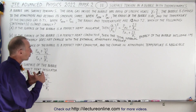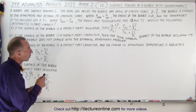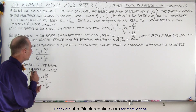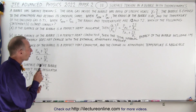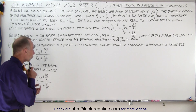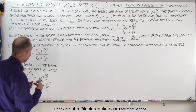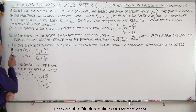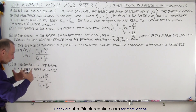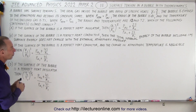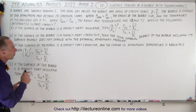When atmospheric pressure is equal to Pa1, the radius of the bubble is R1 and the temperature of the enclosed gas is T1. When atmospheric pressure is Pa2, the radius and temperature are R2 and T2. Which of the following statements is or are correct? They give us four statements, and one to four may be correct.